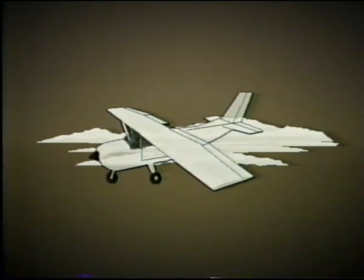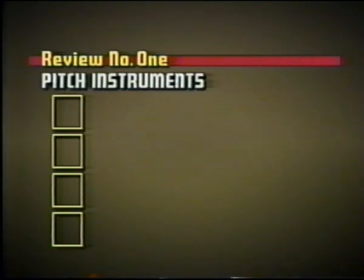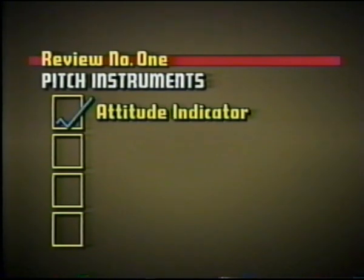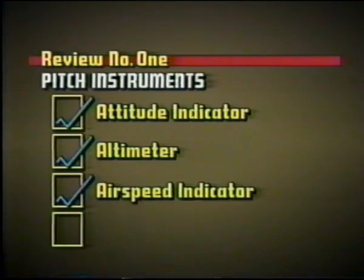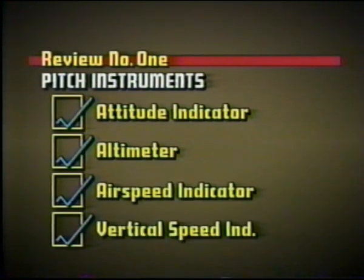Before you are shown how the three instruments connected to this system work, take time for this short review. Flight instruments can be grouped according to function. Which instruments indicate pitch? The attitude indicator, altimeter, airspeed indicator, and vertical speed indicator are used to monitor the pitch of an aircraft.